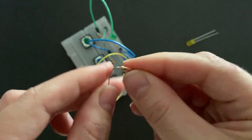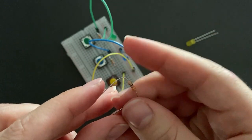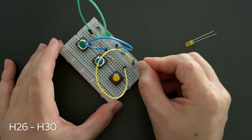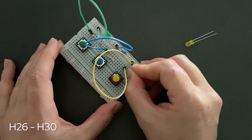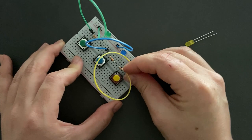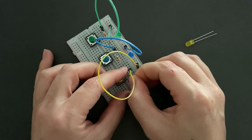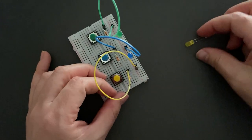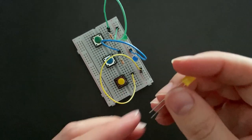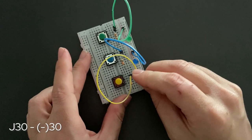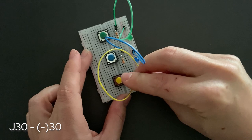Grab another resistor and bend the sides to make a U-shape. And connect the resistor from H26 to H30. Don't forget, our LEDs are polarized, so place the longer leg into J30 and the shorter into negative power rail 30.